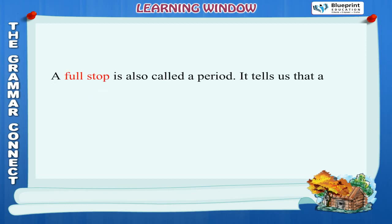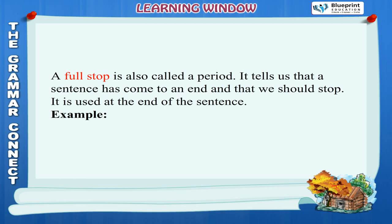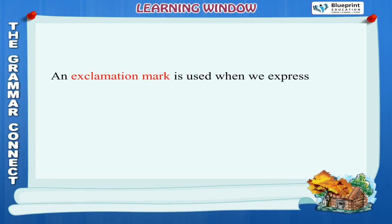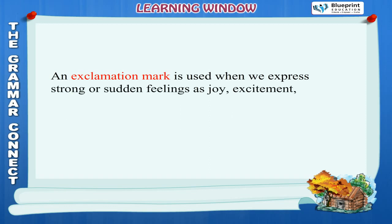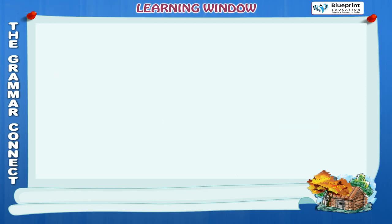A full stop is also called a period. It tells us that a sentence has come to an end and that we should stop. It is used at the end of a sentence. Example: We heard the cuckoo sing. A question mark is used at the end of a question. Example: Where are your books? An exclamation mark is used when we express strong or sudden feelings such as joy, excitement, wonder and sadness. Examples: What a beautiful flower! How lovely the rain is!